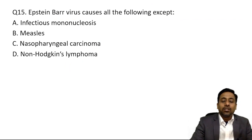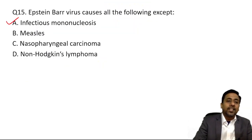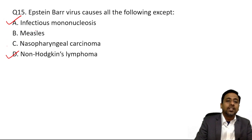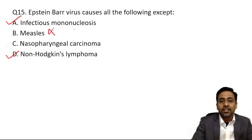Epstein-Barr virus causes all of the following except measles: infectious mononucleosis — yes; nasopharyngeal carcinoma in Chinese origin — yes; non-Hodgkin lymphoma — yes; measles — no. EBV does not cause measles.